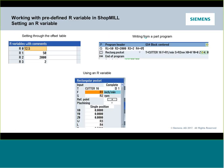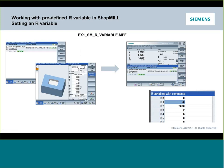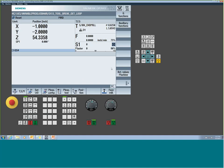To show how R variables work, we'll walk through a simple ShopMill example using SinuTrain — our offline PC control emulator. R variables are found in the offset table under the 'User Variables' button. Under User Variables, the R variable table and global R variables are accessible. You can display a comment column next to each variable to describe its purpose, such as labeling R1 as 'feed rate' so users understand what each variable is used for.